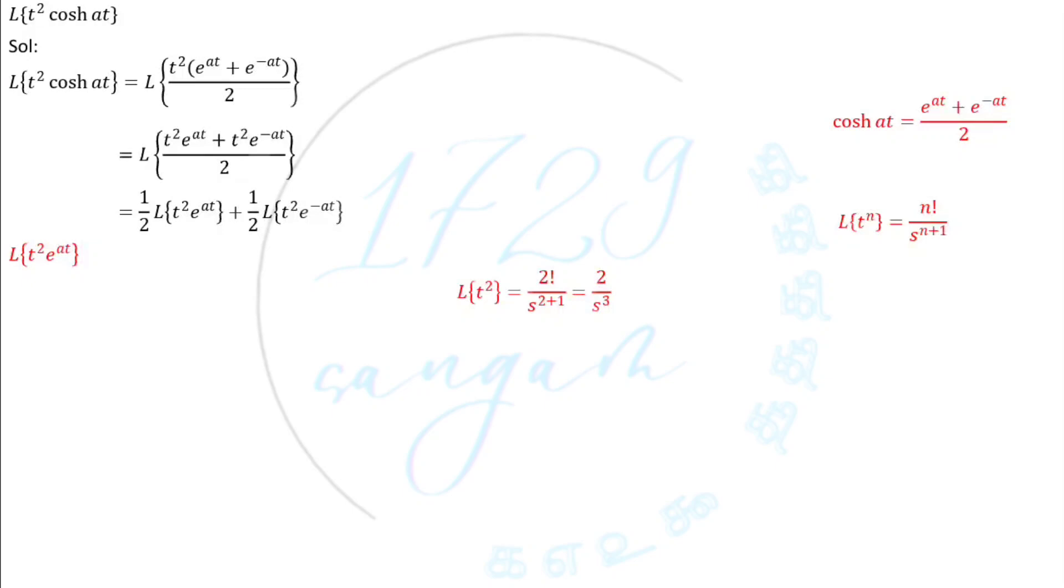Now what's the Laplace transformation of t squared e power at? For this there is another formula: Laplace transformation of e power at f(t) is equal to f dash of s minus a. What is the meaning of that? Means we generally transform t into s, but in this exponential case we transform s minus a like this.